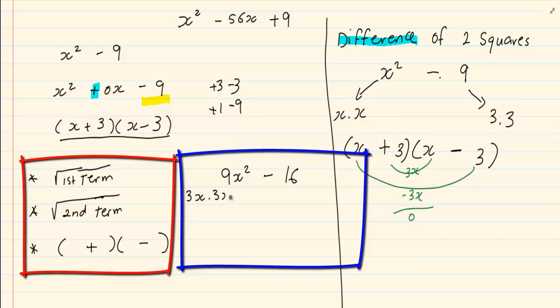So we have got 3x times 3x. What is the root of 16? 4 times 4. Giving us 3x minus 4, 3x plus 4.